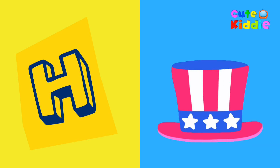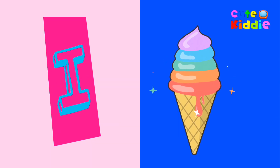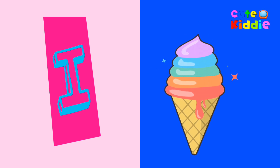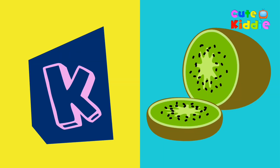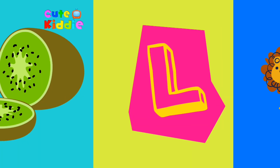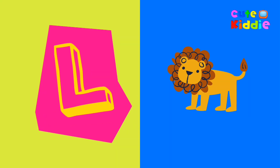I for ice cream, A for juice, K for kiwi, L for loin.